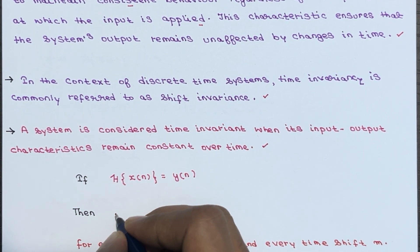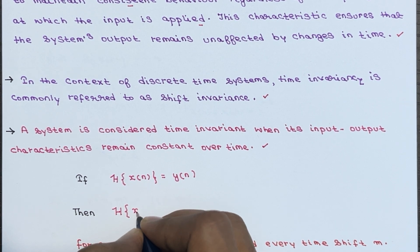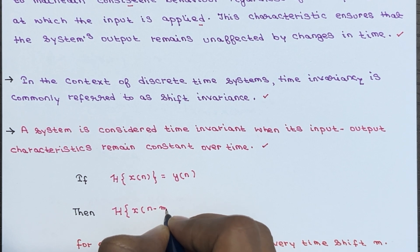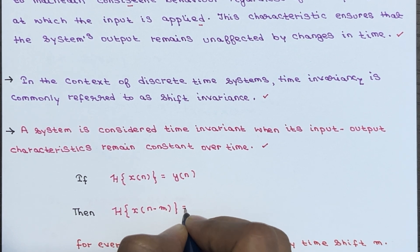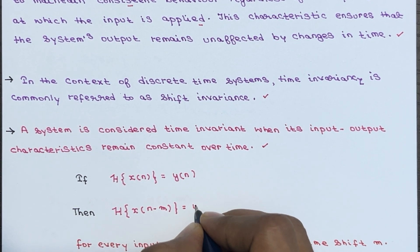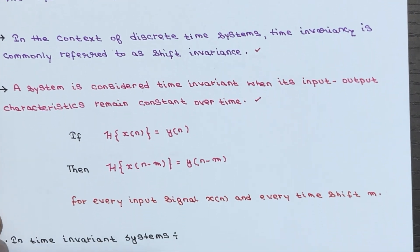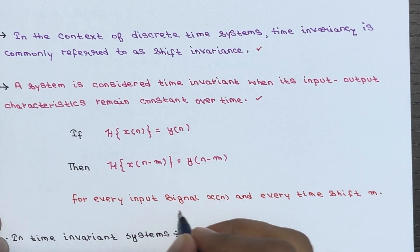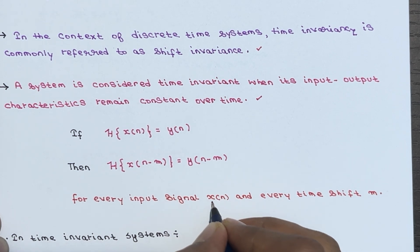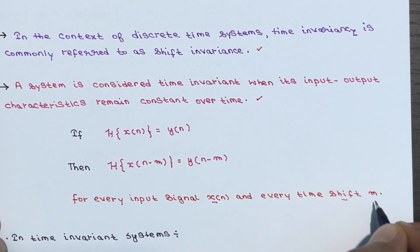then the transform of x(n − m) should be equal to y(n − m). This rule is applicable for every input signal x(n) and every time shift m.